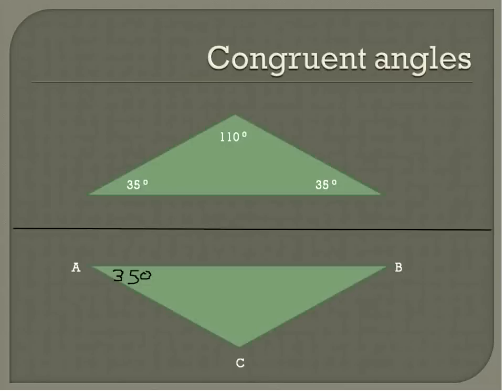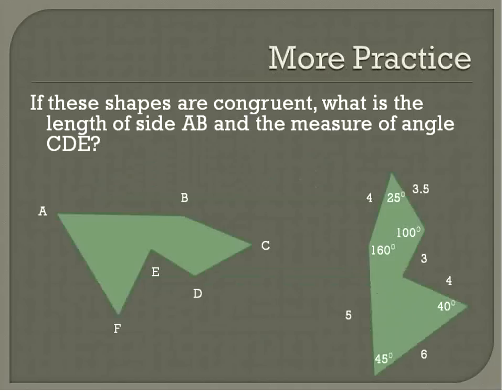And angle C is congruent to 110 degrees because it's congruent with this angle here. We would call that A prime, B prime, C prime. And B would be 35 degrees as well. Again, this would be a reflection transformation. Again, you could have taken, because this is an isosceles triangle, we could have rotated it and gotten the same exact thing. But I'm just going to say we've reflected it.